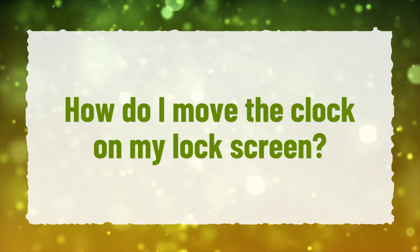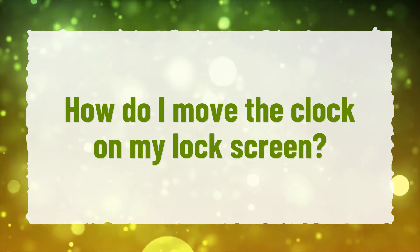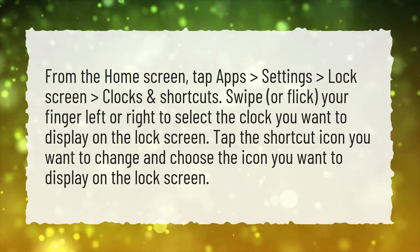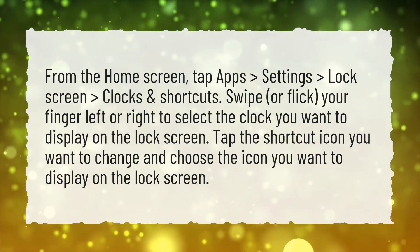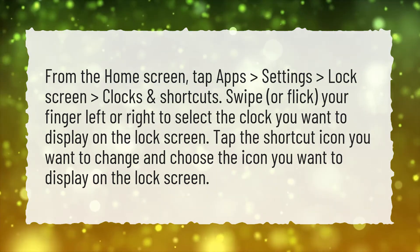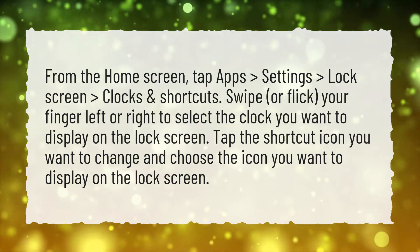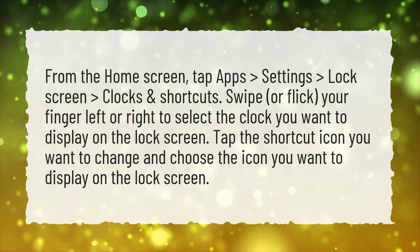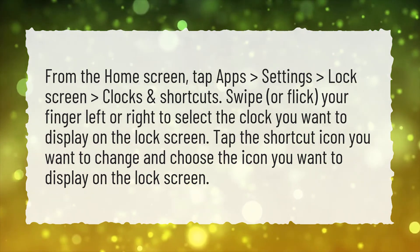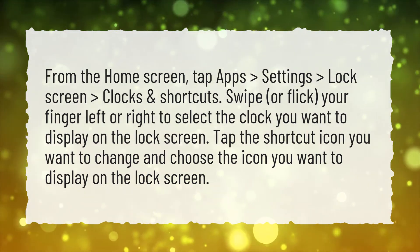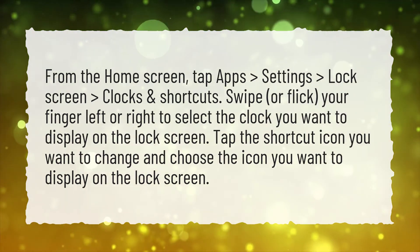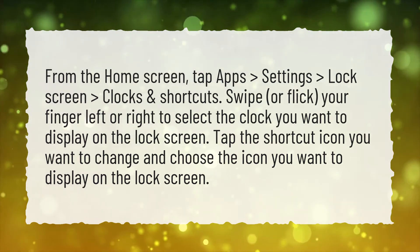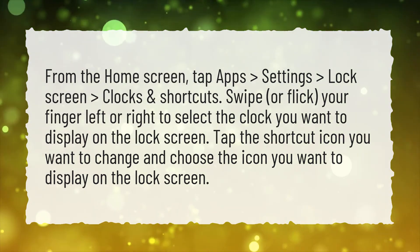How do I move the clock on my lock screen? From the home screen, tap Apps, Settings, Lock Screen, Clocks and Shortcuts. Swipe or flick your finger left or right to select the clock you want to display on the lock screen. Tap the shortcut icon you want to change and choose the icon you want to display on the lock screen.